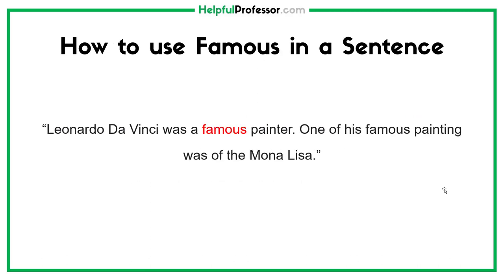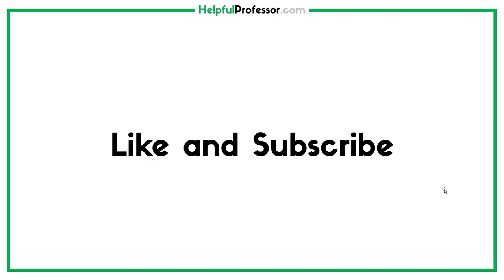Here's how to use famous in a sentence. We can talk about Leonardo da Vinci, the famous painter. You can say, 'Leonardo da Vinci was a famous painter. One of his famous paintings was the Mona Lisa.' Leonardo da Vinci was famous, but not infamous, because most of us know him for the fact that he was a painter, not for anything bad that he might have done.